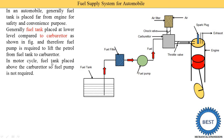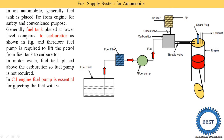In a motorcycle, or our two-wheeler, the fuel tank is placed above the carburetor, so a fuel pump is not required. In our bike, no fuel pump is used because the tank is at the upper level and the carburetor is below the tank.